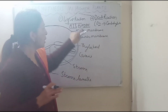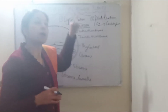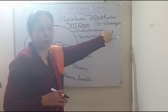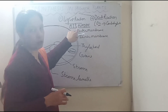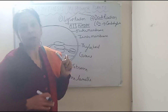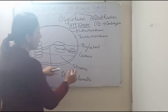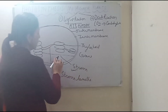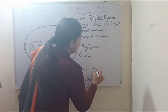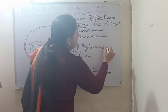This is the light-independent reaction. The energy molecules ATP and NADPH are used along with carbon dioxide to make food. Carbon dioxide fixation occurs in the stroma. So, the dark reaction takes place in the stroma, and the light reaction takes place in the thylakoid. Stroma lamellae are also involved in the light reaction, and the thylakoid is also where the light reaction occurs.